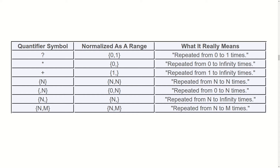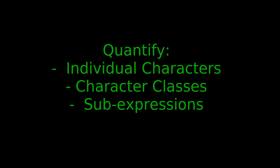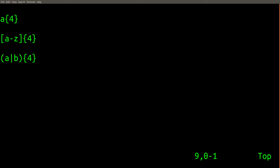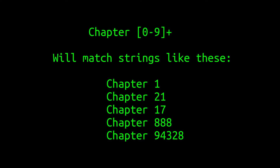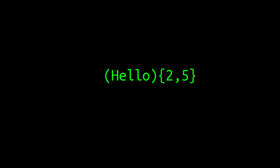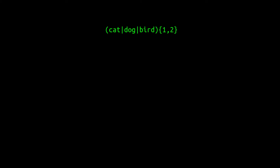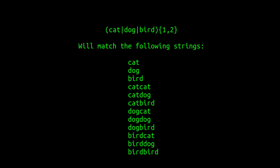Here is a table to summarize what we've learned so far. Quantifiers can be used to specify how many times a character in your regular expression can be repeated, but you can also apply quantifiers to character classes. For example, you can use a regular expression to match chapter titles in a book regardless of how many digits are in the chapter number. Most importantly, you can also apply a quantifier to a sub-expression to repeat a sequence of characters. You can even apply quantifiers to a sub-expression that contains an alternation.